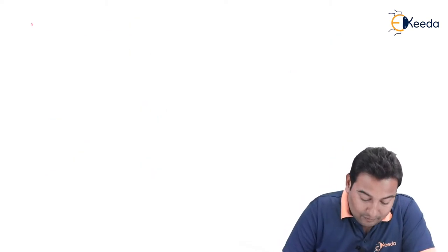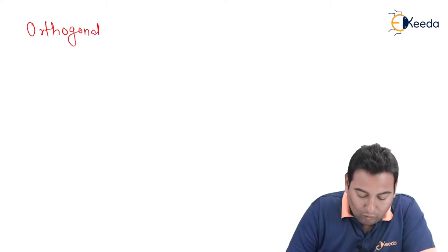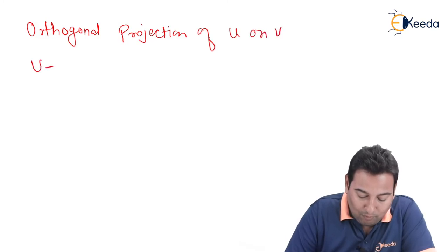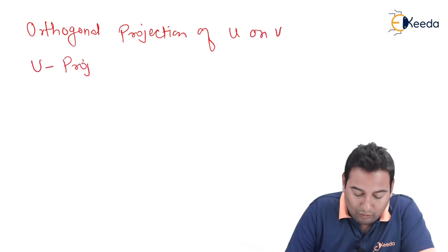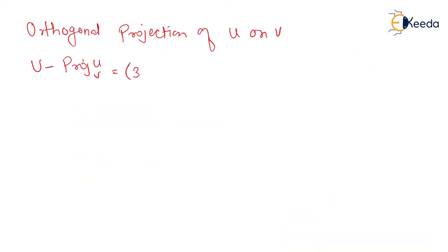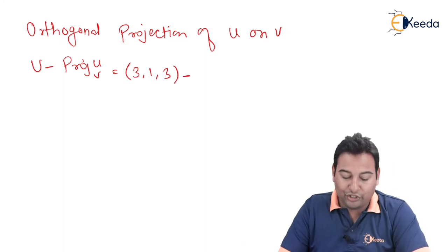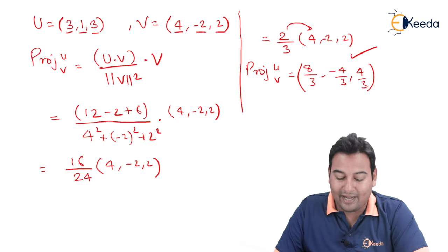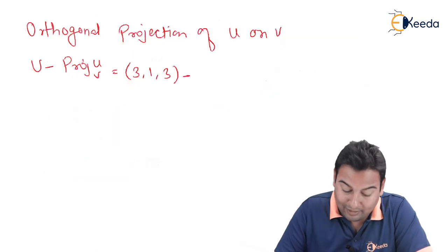Next part asked is orthogonal projection of u on v. And it is given by u minus projection of u on v, which equals u. u is (3,1,3) minus projection of u on v. Projection of u on v we just found out, that is (8/3, -4/3, 4/3).